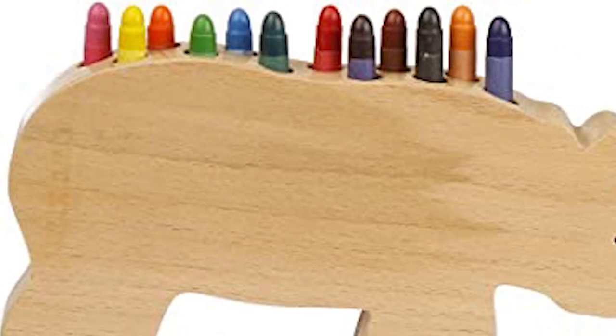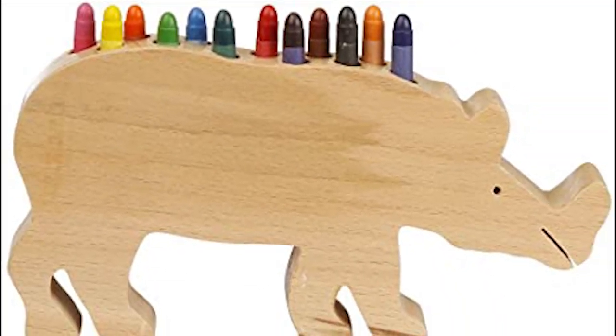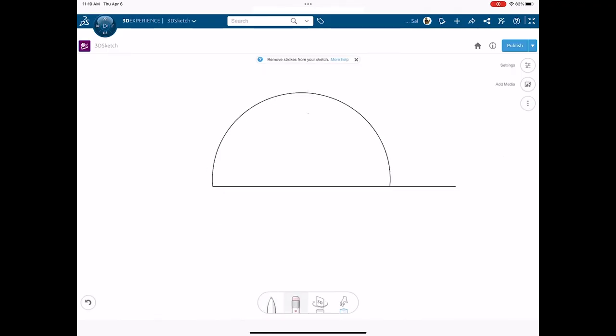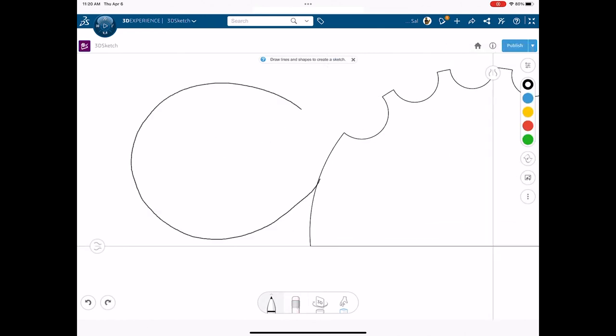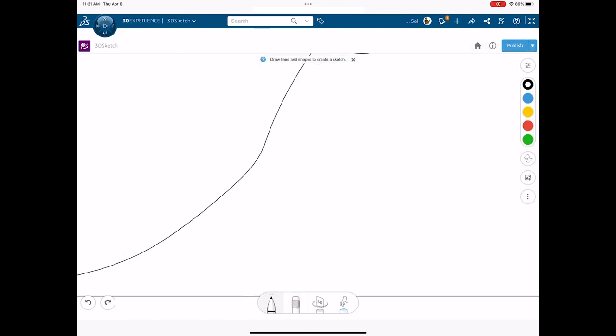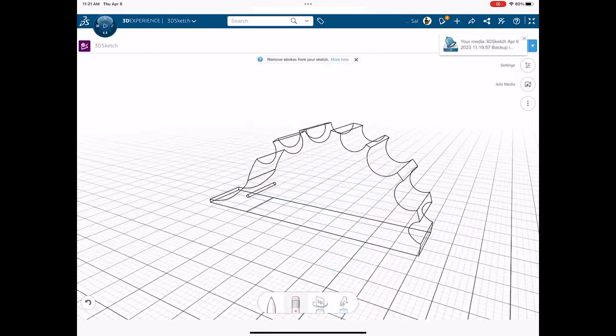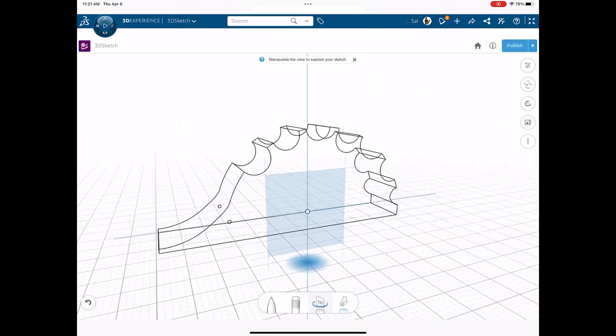As a child, I remember loving those wooden crayon holders that came in the shape of animals or vehicles. And I thought it would be cool to make something like that to store drill bits. So I took a quick stab at sketching an idea. On my iPad, I used the 3D Sketch app to draw a fun little hedgehog and showed it to Chin Lu so we could start brainstorming.